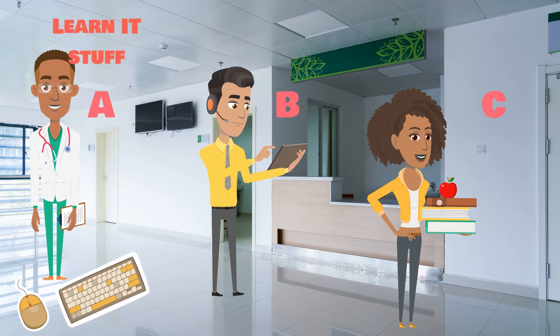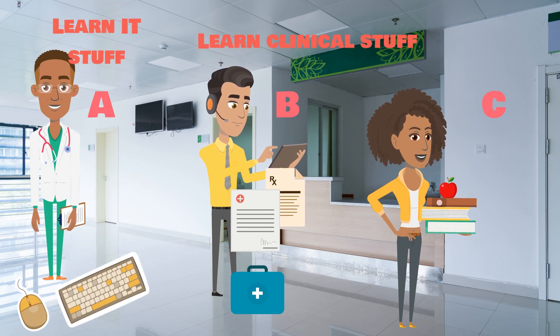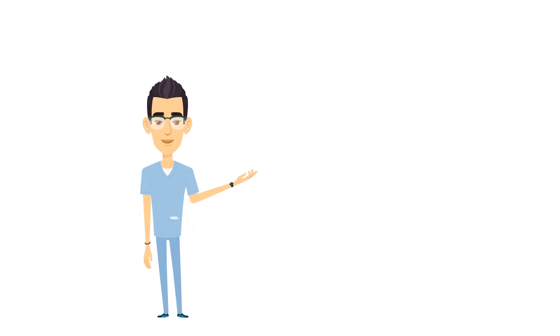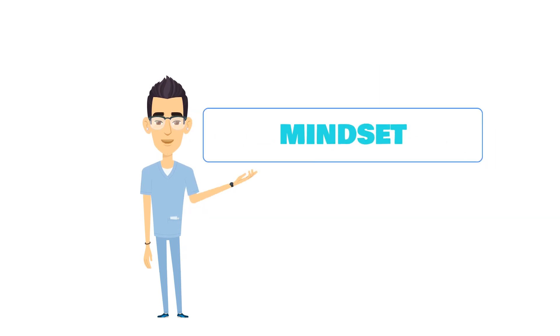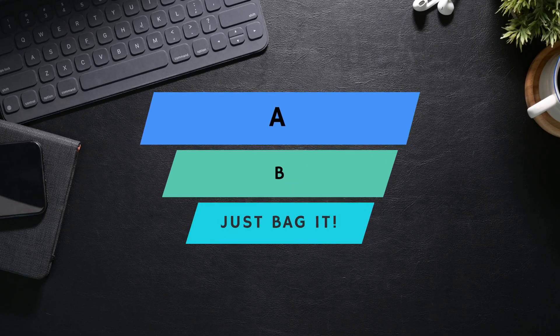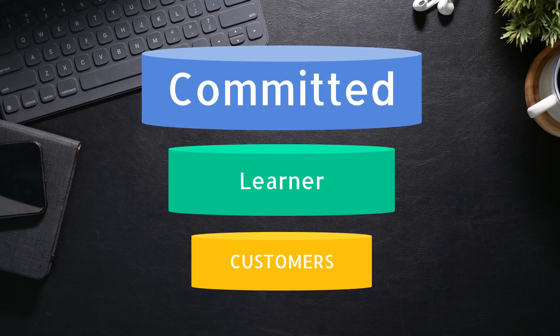That was a high-level overview of what to do, whether you're person A, person B, or person C. Since this is a long process that requires a lot of time and monetary investment, the last thing we need to discuss today is mindset. Whether you're person A, B, or C, you need to be the following three things: highly committed, a perpetual learner, and open-minded.